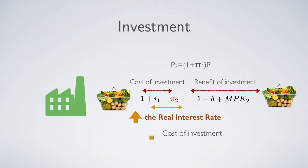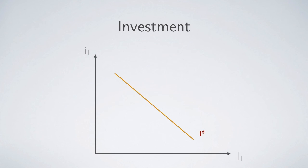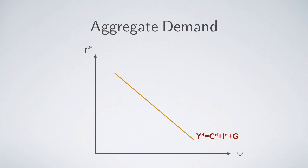When the real interest rate is higher, the cost of investment is higher, so we decrease investment. In the past, we drew investment demand as a negative-slope line with the nominal interest rate, but more precisely it should be the real interest rate — specifically the expected real interest rate, since we cannot observe exact inflation tomorrow. Now both consumption demand and investment demand are negatively related to the expected real interest rate. Summing them together and adding government spending G, the aggregate demand curve is negatively related to the expected real interest rate.